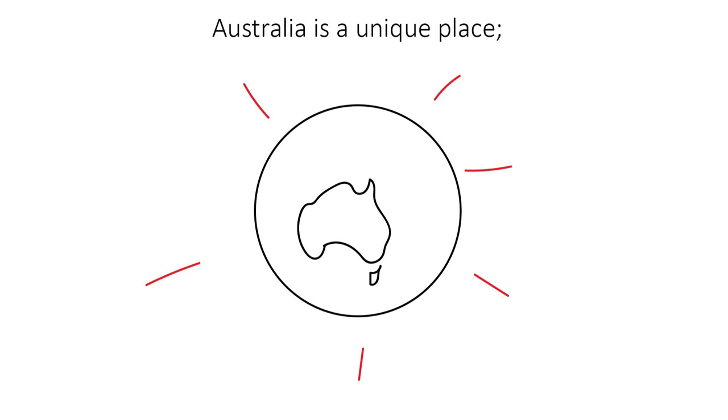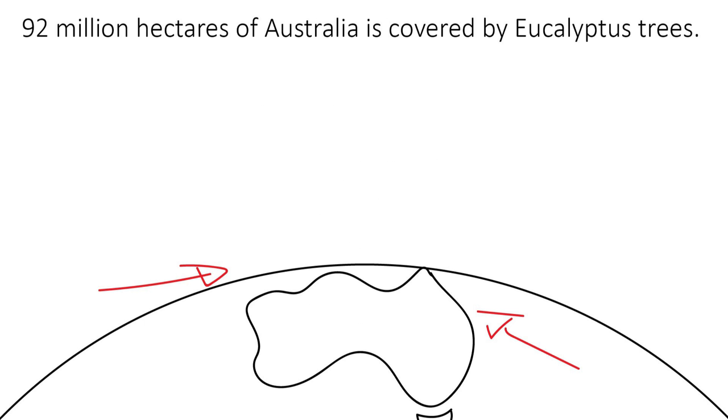Australia is a unique place. 92 million hectares of Australia is covered by eucalyptus trees.